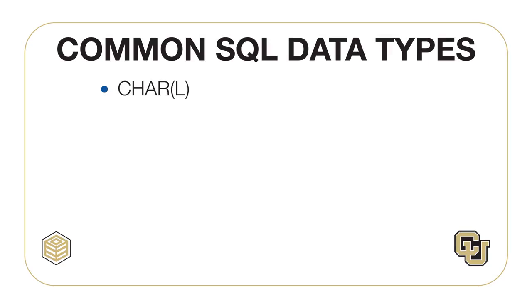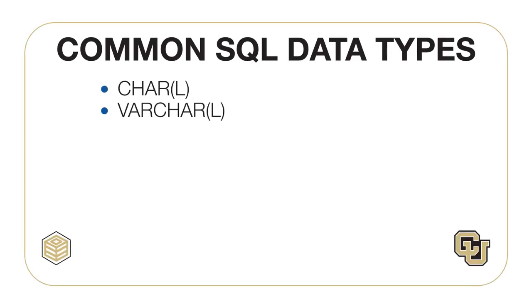A key part of a column definition is the data type specification. In this course, we will use standard SQL data types. CHAR (C-H-A-R) means a fixed-length character string, or text. The number in parenthesis indicates the maximum length. The DBMS will always store the maximum length for CHAR columns, so you should use this data type for columns with the same length, such as two-character abbreviations for state names. VARCHAR means a variable-length character string. The DBMS will always store the length actually used for the value, not the maximum length, so you should use this data type for columns with varying length, such as student names.